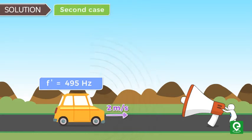Now in second case, since the sound gets reflected from the car, it will behave as the source of frequency. Now we have to calculate the frequency which is detected by detector which is kept at the location of source.